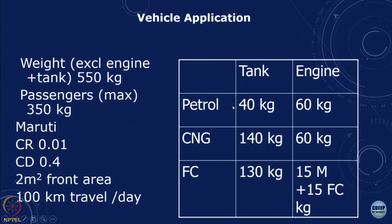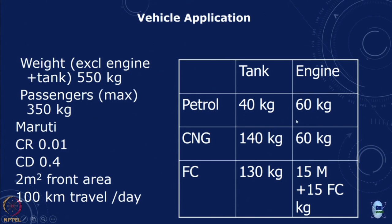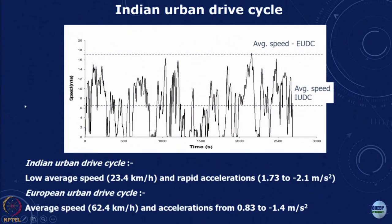The petrol tank weighs 40 kg, the CNG tank 140 kg, and the fuel cell system turns out to be 130 kg. Engine weights are 60 kg each, while the electric motor is 15 kg plus 15 kg additional components, totalling 30 kg. So the petrol drivetrain adds about 100 kg, CNG about 200 kg, with corresponding differences affecting power and fuel requirements.